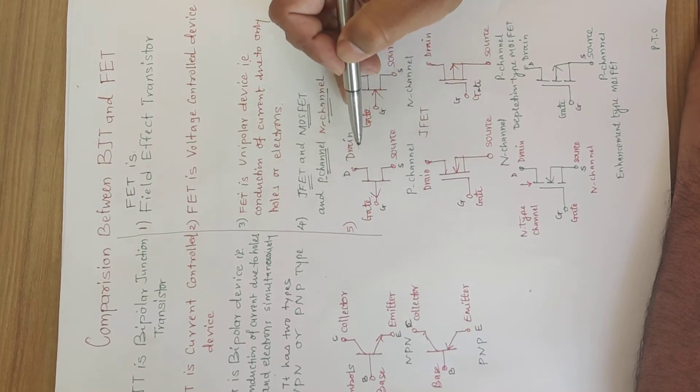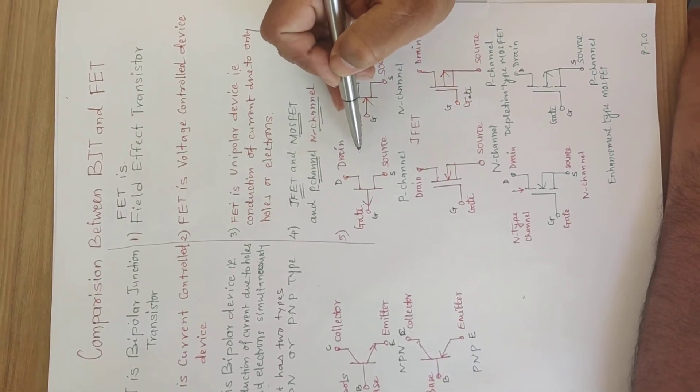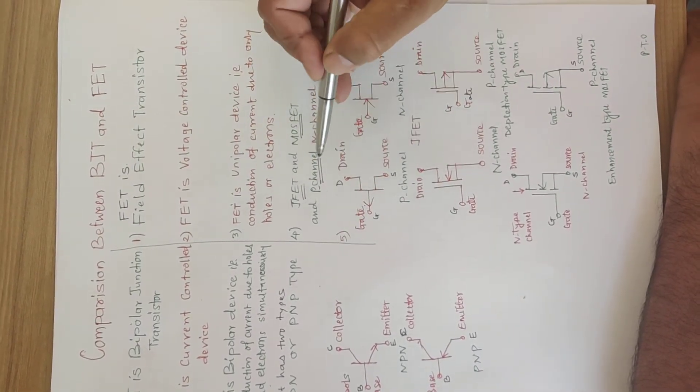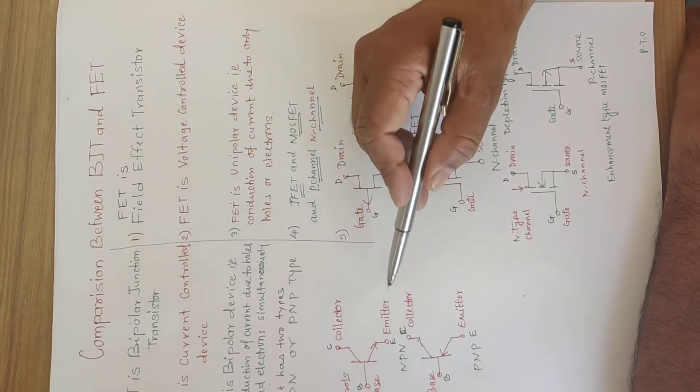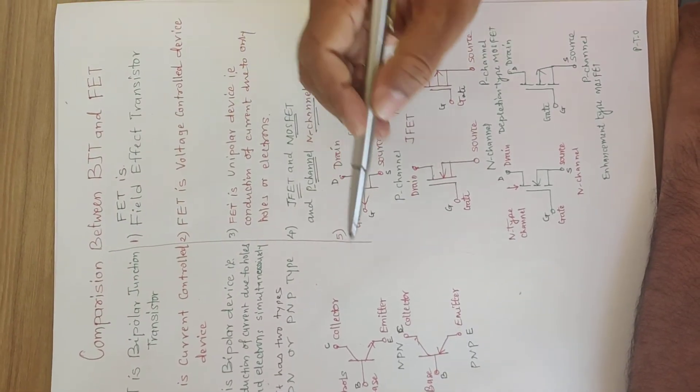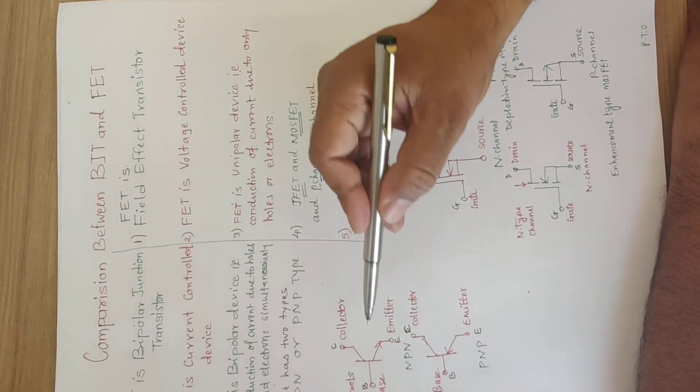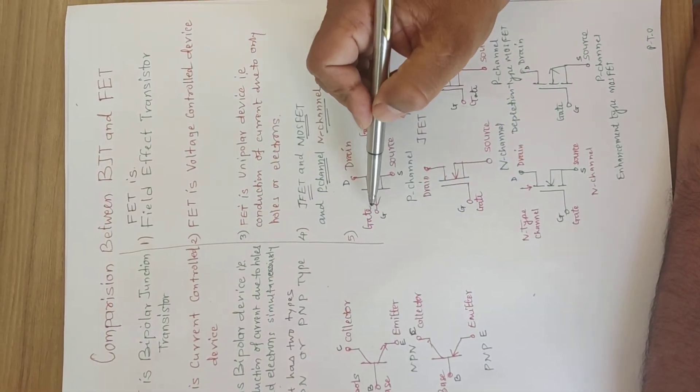In FET, we are also having three terminals. Analogous to the collector, we are having drain. For emitter, we are having source. For base, we are having gate.